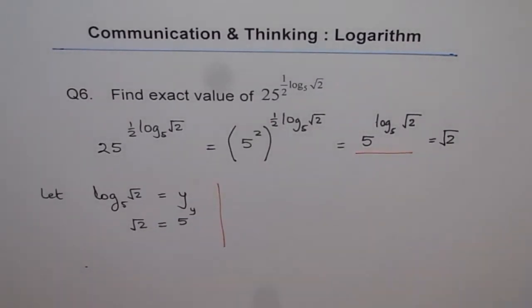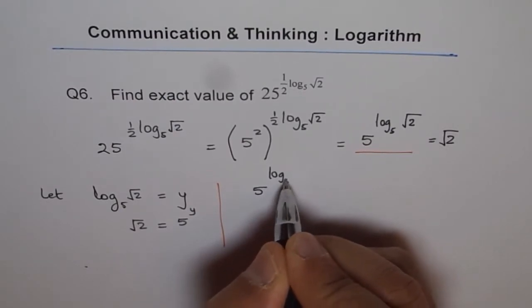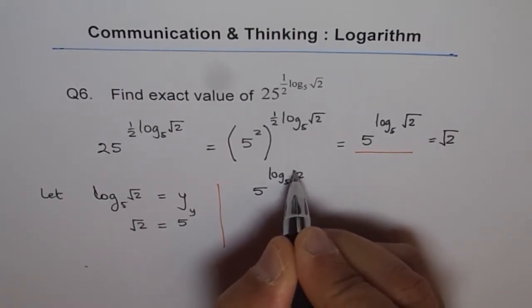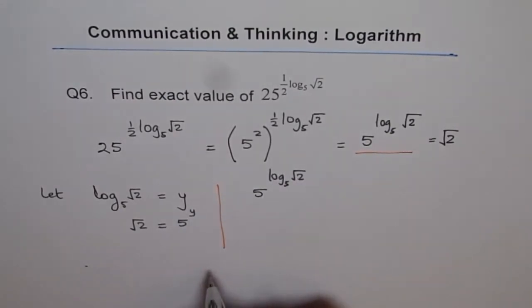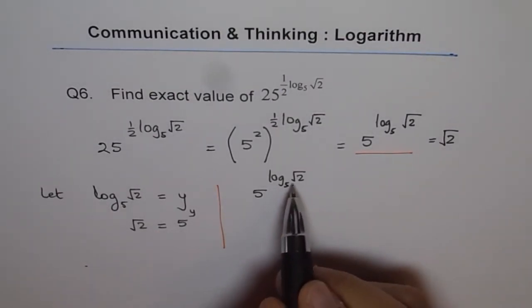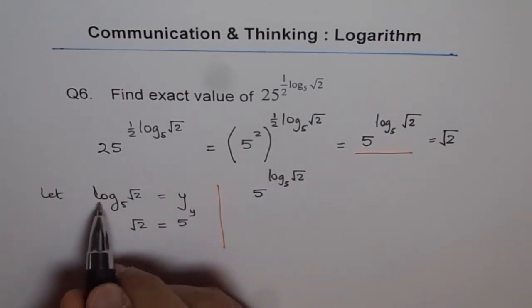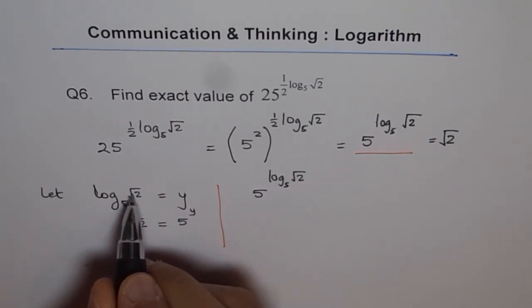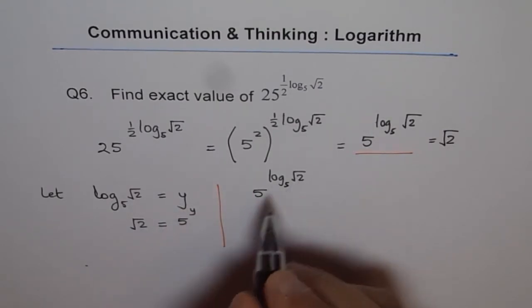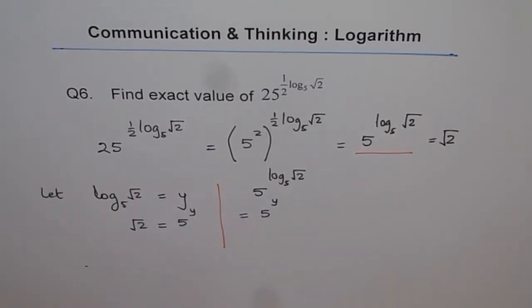So we have here 5 to the power of log to the base 5 of square root 2. Now we can write this as log to the base 5 of square root 2 is y. So we can write this as equal to 5 to the power of y.